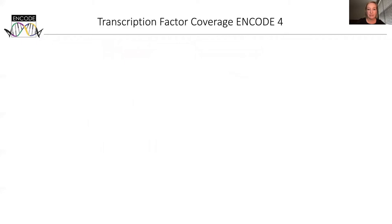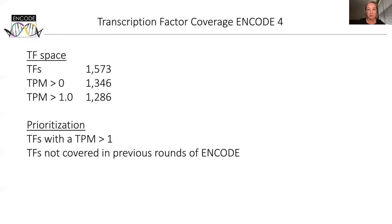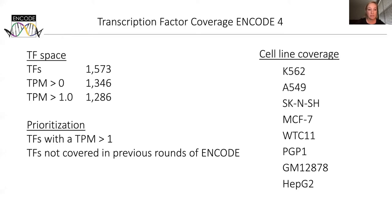We have a transcription factor list curated from various annotation databases using criteria such as known motif or DNA binding domain. This list contains about 1600 transcription factors, about 1300 of those have a TPM over one — those are the ones we are primarily focusing on. We analyze transcription factor expression from RNA-seq datasets previously generated by ENCODE, and we determined the cell types with the broadest aggregate set of transcription factor expression to maximize element discovery. Currently we are expressing transcription factors in K562, A549, SKNSH, MCF7, WTC11, PGP1, GM12878, and HEPG2.